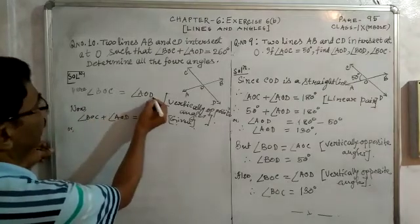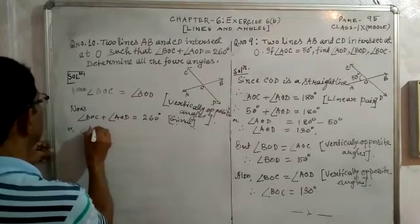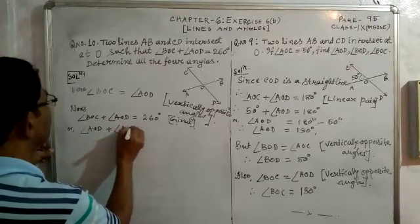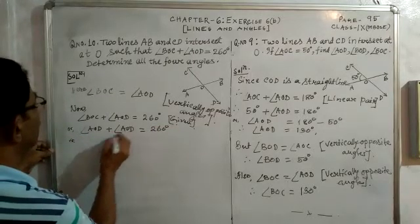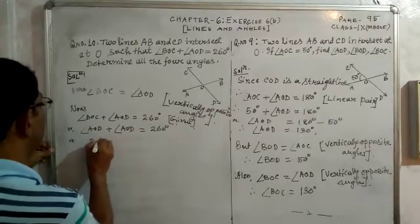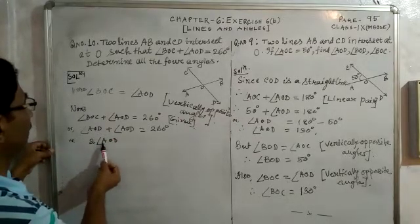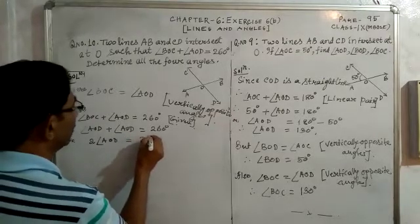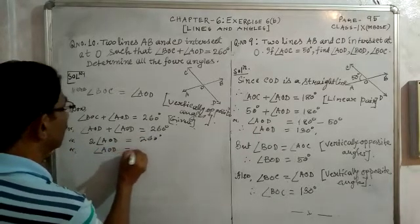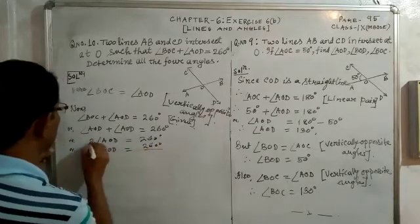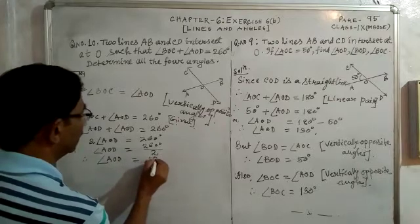Since angle BOC equals angle AOD, we write: angle AOD plus angle AOD is equal to 260 degrees, or 2 times angle AOD equals 260 degrees. Therefore angle AOD is equal to 260 divided by 2, which gives angle AOD equal to 130 degrees.